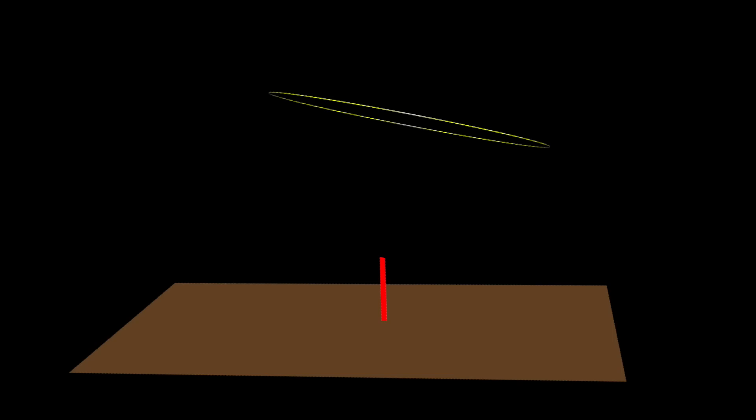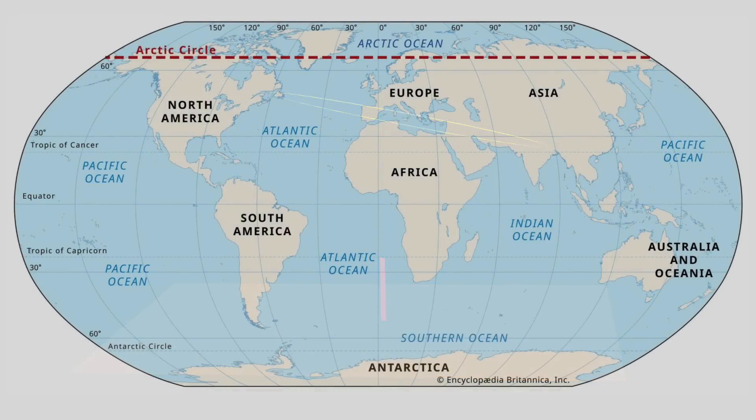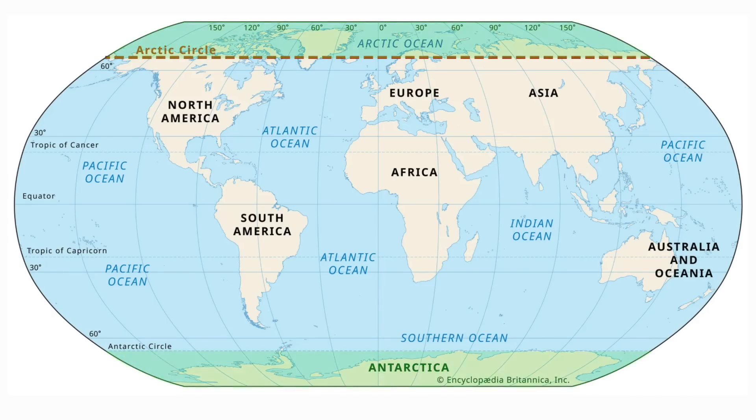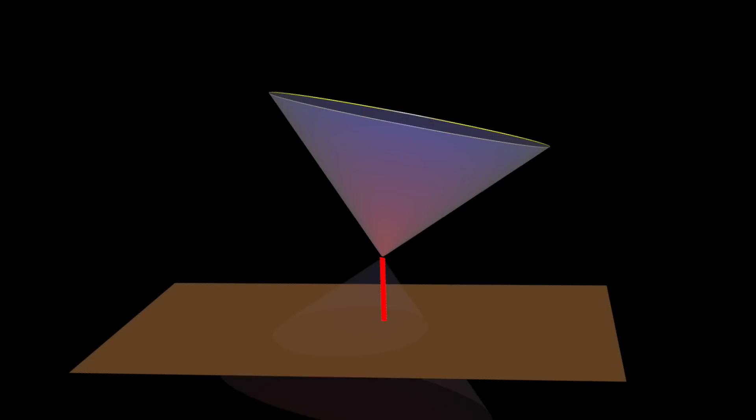Then we can also get an elliptical shadow. This happens when you're near one of the poles, but not on them. Where the sun's apparent path is slightly tilted, almost horizontal, but not exactly. And it doesn't set. This can only happen in the Arctic or Antarctic circles. As within those, there are times of the year where the sun never sets. And during those days, you will get an ellipse. Just the ground intersecting a cone, but at a nearly horizontal angle.